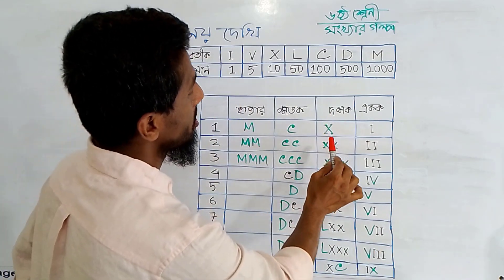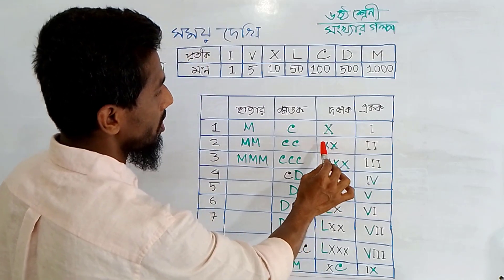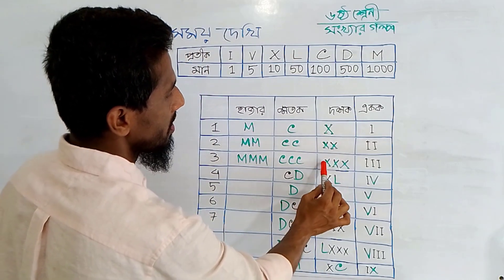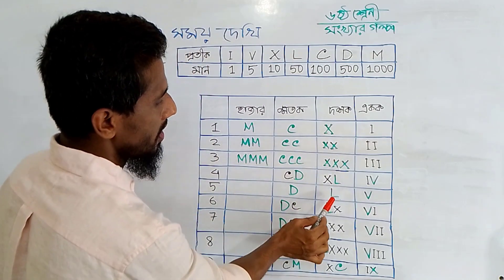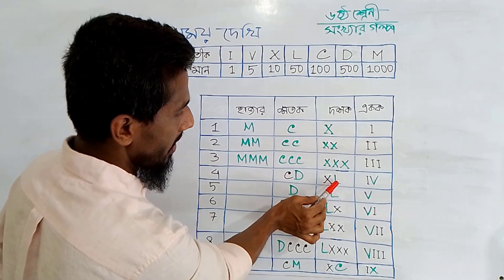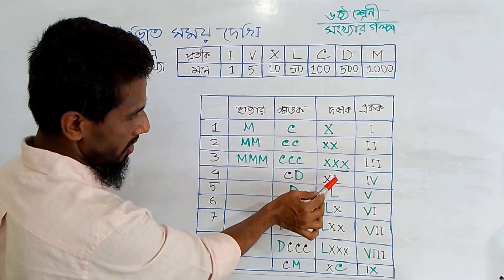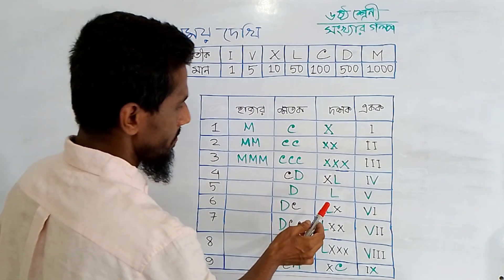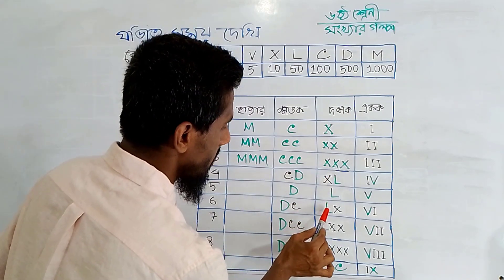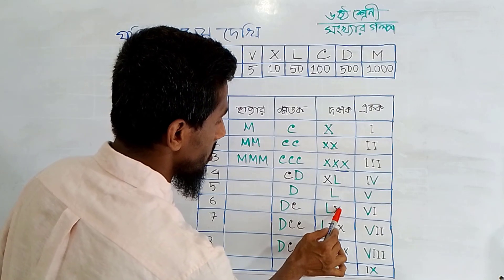X means 10, x means 12, 3. L means 5, and l means 10, which means 10, and total fact, which means 10.